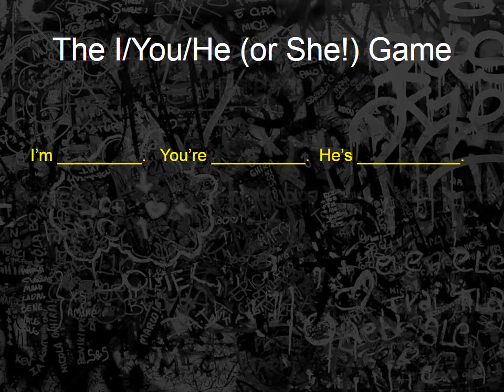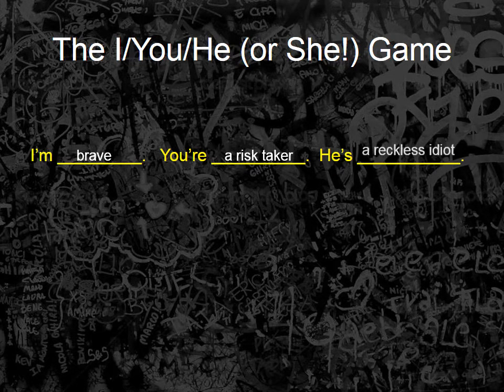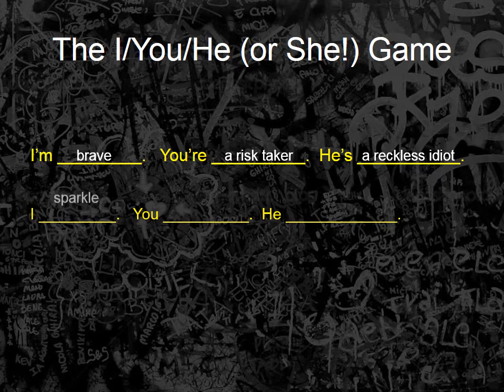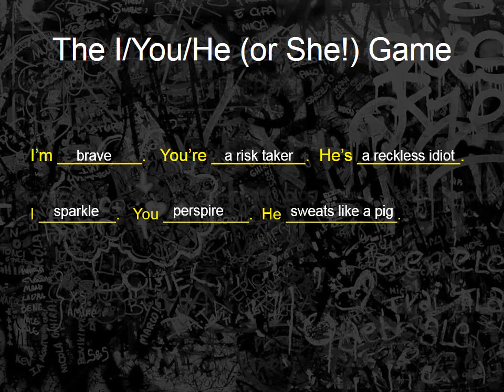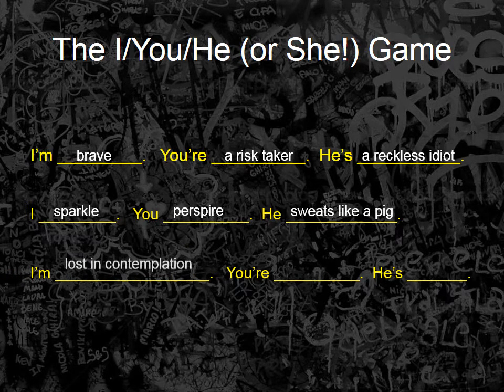One way to illustrate the difference in emotional content between words is the so-called I/you/he-or-she game. You apply a positive term to yourself, a more neutral or slightly negative one to a second person, and a term with the same meaning but a very negative connotation to a third person. For example: I'm brave / you're a risk taker / he's a reckless idiot. I sparkle / you perspire / he sweats like a pig — though pigs don't actually sweat much, which is why they wallow in mud. I'm lost in contemplation / you're distracted / he's oblivious.